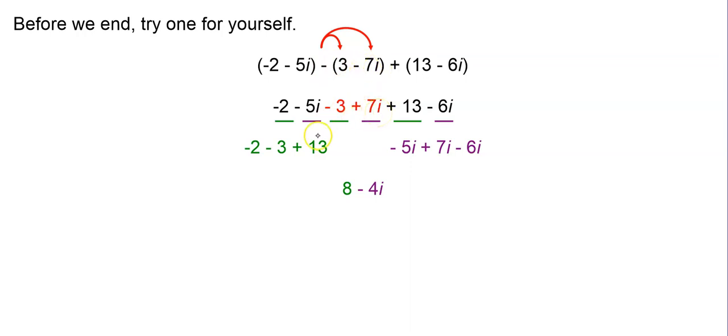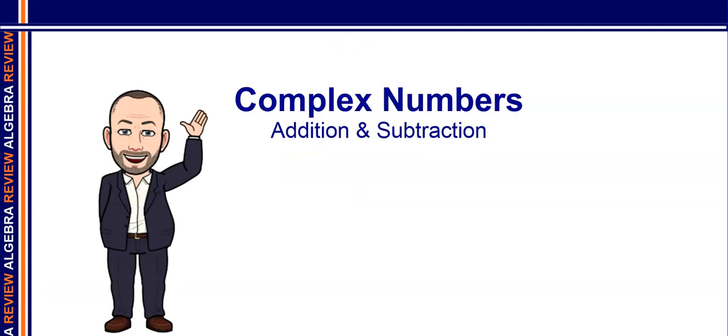So from there, you're just combining all the real terms, and you're just combining all the imaginary terms. And you should have gotten 8 minus 4i. And really, that's all there is to adding and subtracting complex numbers.